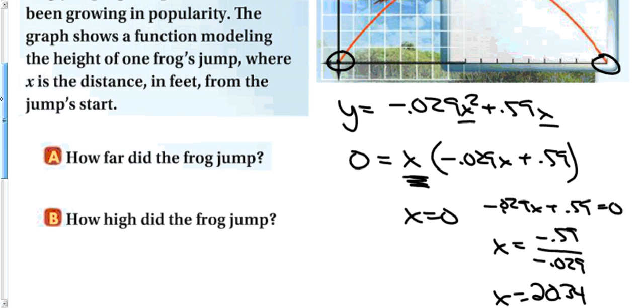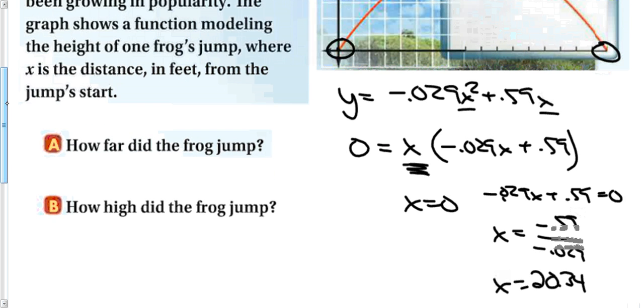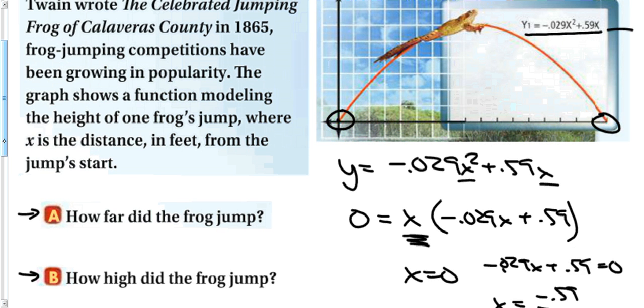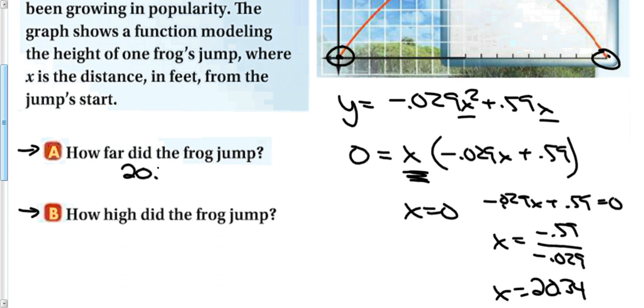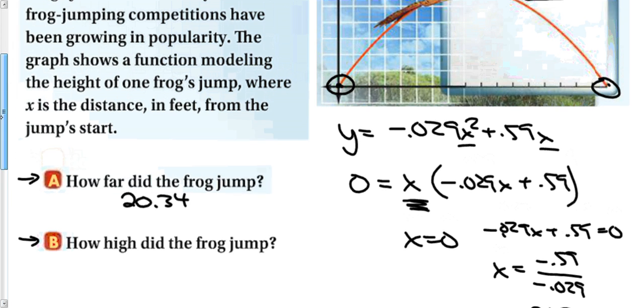Now, let's take a look at these two questions right here, A and B. How far did the frog jump? Well, if I look at my graph, and I have a better graph of this in a second, the frog started jumping at 0, 0. And my other intercept is the place where it landed. So the frog jumped 20.34 feet. How high did the frog jump?